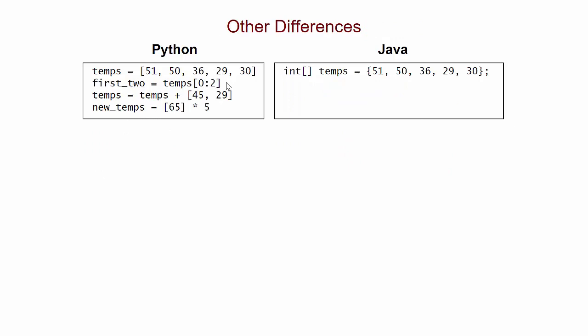In Python, lists have operators for slicing to get a sublist, for concatenating one list onto another, for getting repeated copies of values into one big list. Unfortunately, Java arrays do not have those operators. They're much more bare-boned.